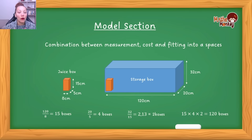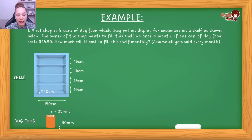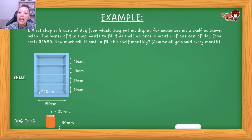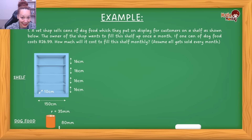Now I'm going to use an actual exam question — a combination of measurement, costs, and fitting into space. A vet shop sells cans of dog food which they put on display on a shelf. The owner wants to fill the shelf up once a month. If one can of dog food costs $26.99, how much will it cost to fill this shelf monthly? Assume all get sold every month.